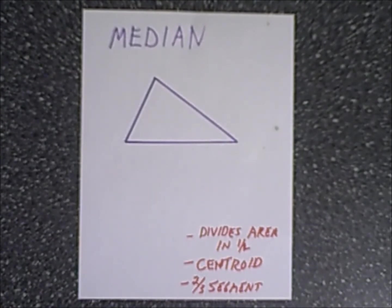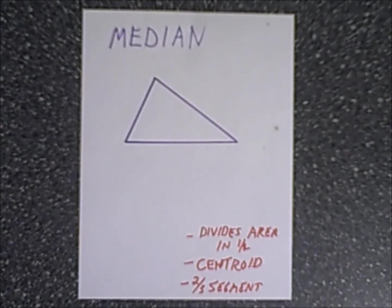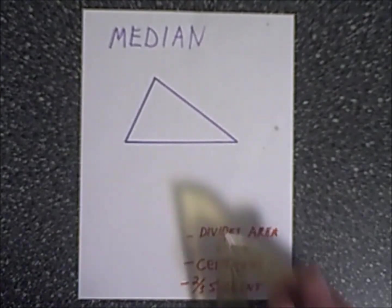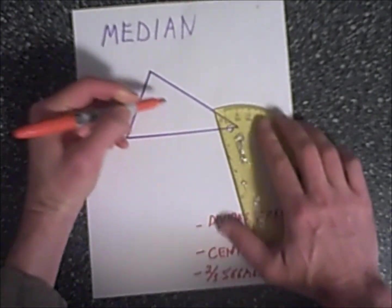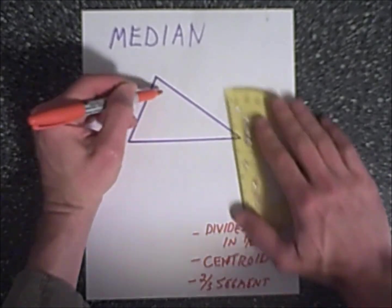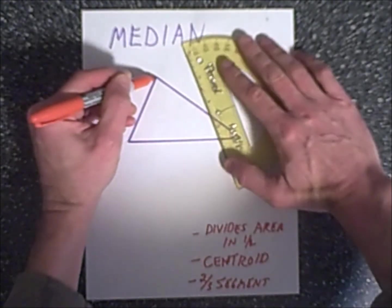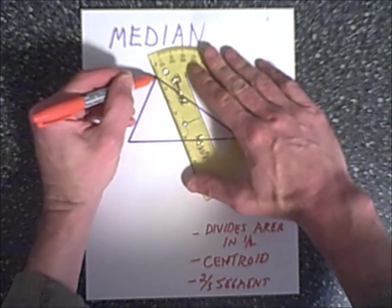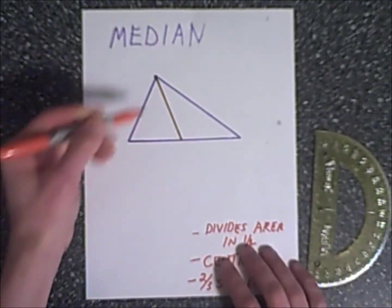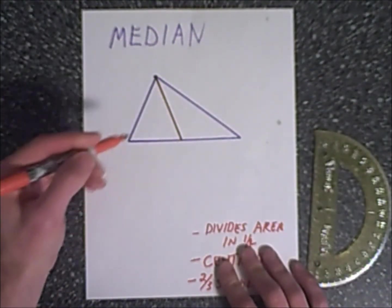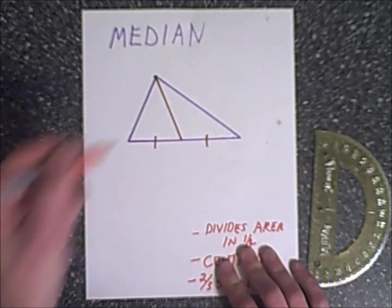We'll start with the median. The way you draw it is simply a line segment that extends from the vertex to the midpoint of the opposite side. You start at a vertex, aim for the midpoint of the opposite side, and draw the segment. These two sides are congruent.